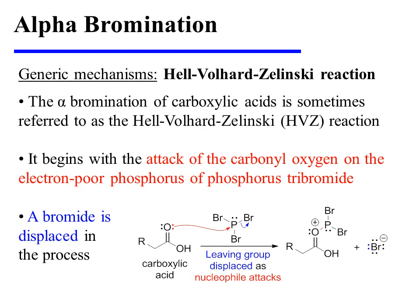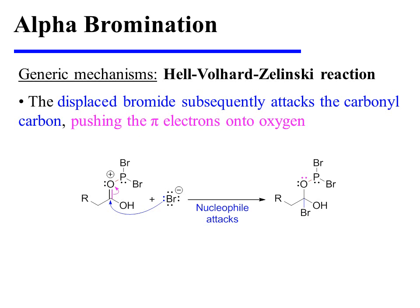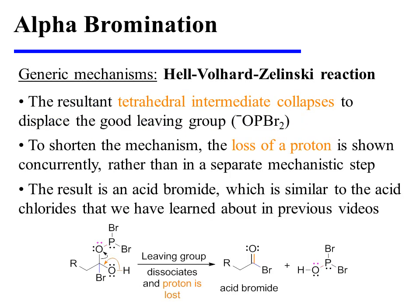The alpha-bromination of carboxylic acids is sometimes referred to as the Hell-Volhard-Zelinski or HVZ reaction. It begins with the attack of the carbonyl oxygen on the electron-poor phosphorus of phosphorus tribromide. A bromide is displaced in the process. The displaced bromide subsequently attacks the carbonyl carbon, pushing the pi electrons onto oxygen. The resultant tetrahedral intermediate collapses to displace a good leaving group, and the loss of a proton yields an acid bromide, which is similar to the acid chlorides learned about in previous videos.